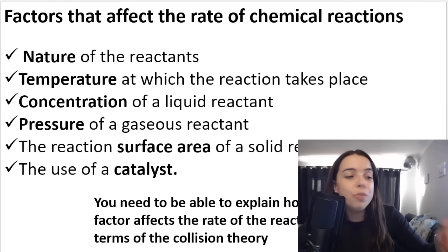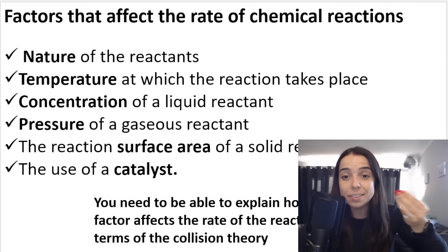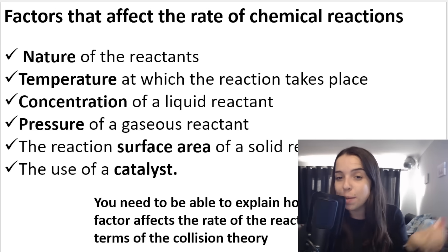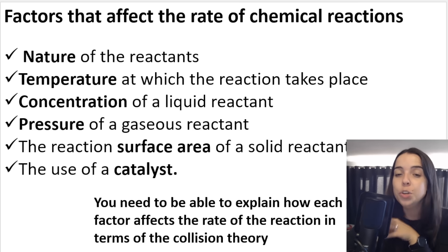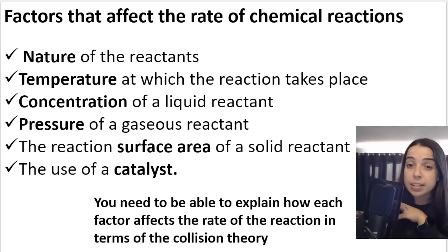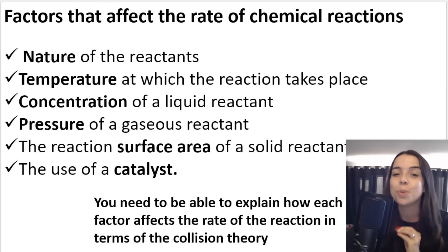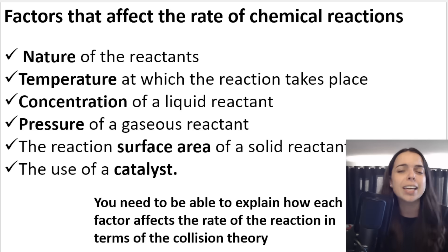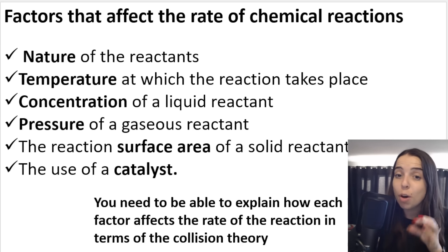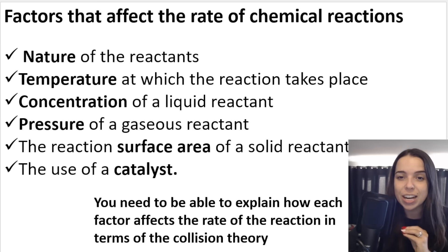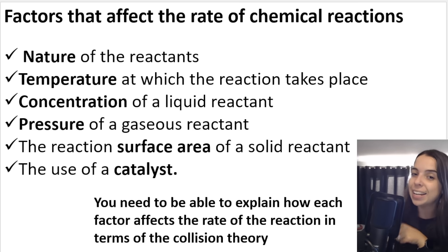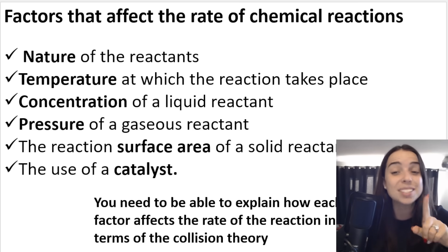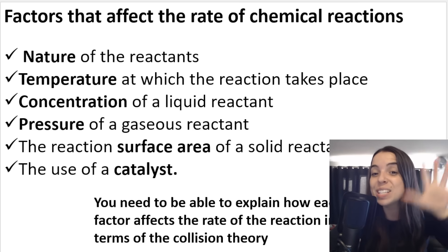That is an overview of the factors that affect the rates of chemical reactions — it's all linked to the collision theory. You need to be able to explain how all of these factors affect the rate of reaction in terms of the collision theory. In the next video lesson we will go over this in more detail. Subscribe if you haven't — bye everybody!